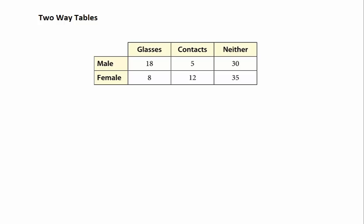In this lesson you are going to learn about two-way tables. By the time we're done you will know how to use two-way tables to answer a variety of different questions and be able to read them. This two-way frequency table shows the number of male and female students who wear glasses, wear contacts, or wear neither glasses nor contacts. We're going to use this information to answer some questions.